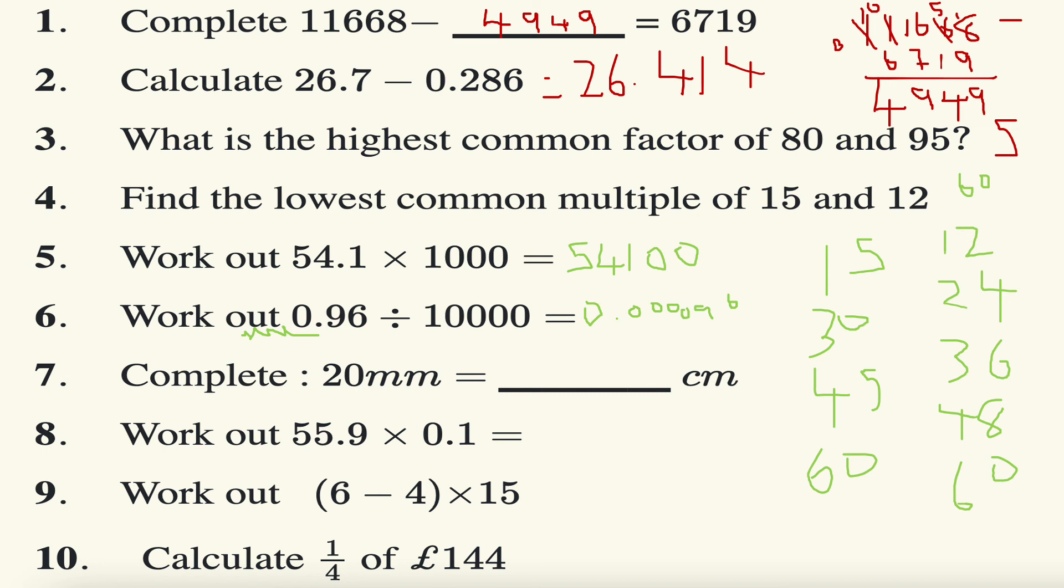Question number seven: complete 20 millimeters equals how many centimeters. Well, the answer is two. Millimeters to centimeters I divide by 10.